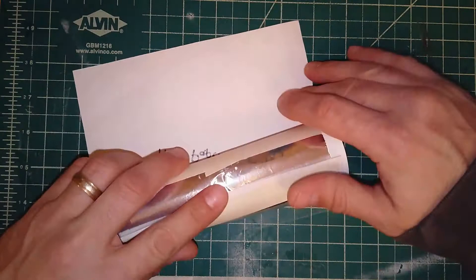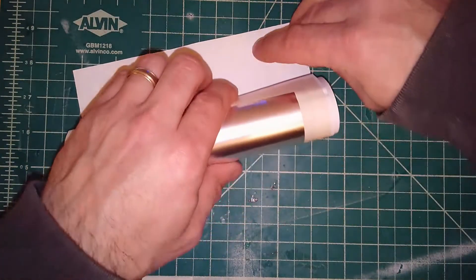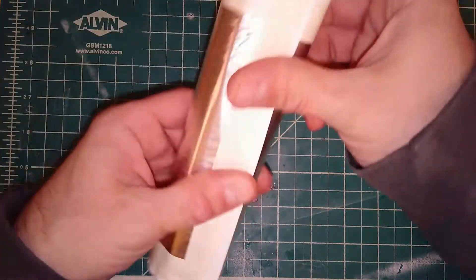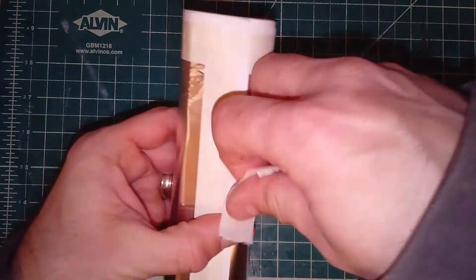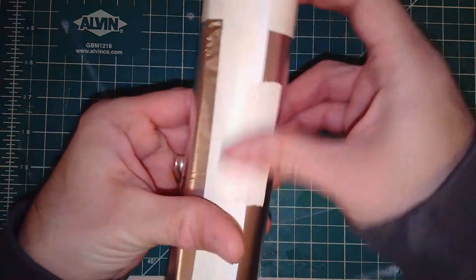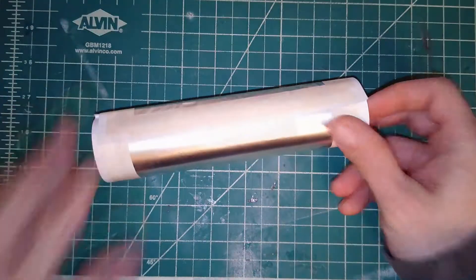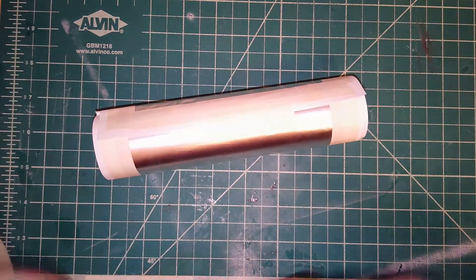I pull it, wrap it tight, and then I'm going to use a piece of masking tape to hold it there. And then I'm going to go ahead and tape that seam.